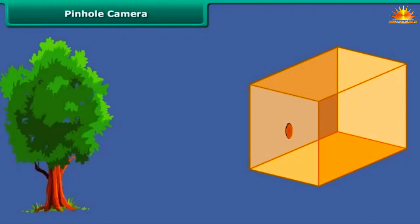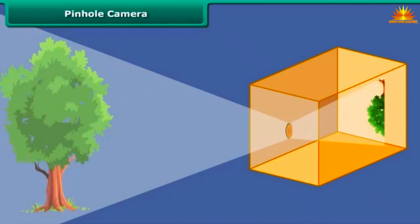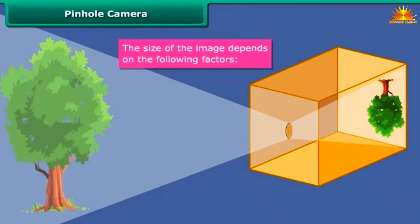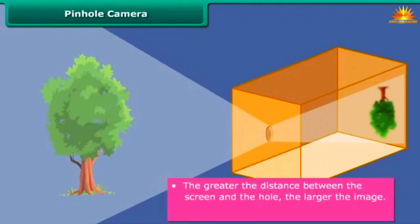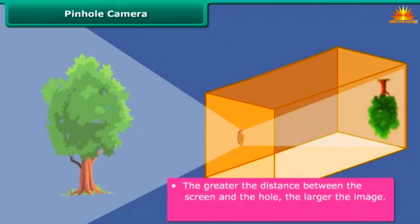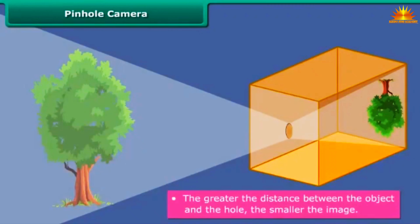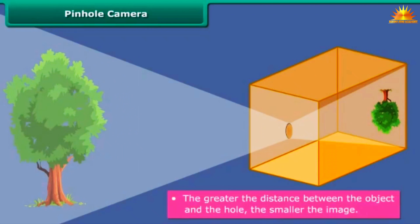Make the pinhole face a lighted object. An image of the object is formed on the tracing paper. The size of the image depends on the following factors: the greater the distance between the screen and the hole, the larger the image — but the larger the image, the fainter it is. The larger the distance between the object and the hole, the smaller the image.